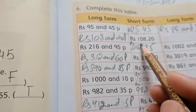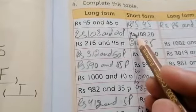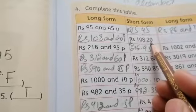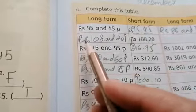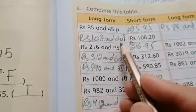The short form is rupees 108.20. It means we can write it Rupees 108 and 20 paisa.